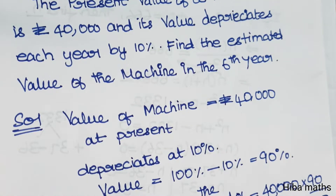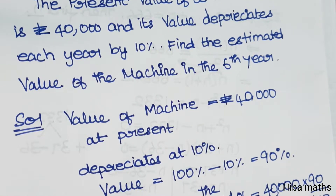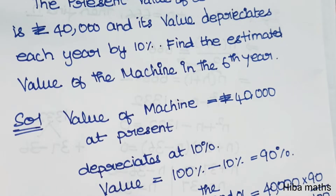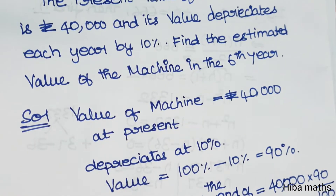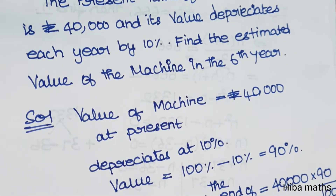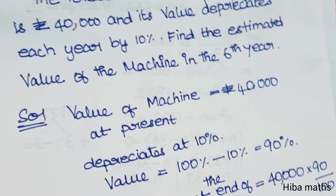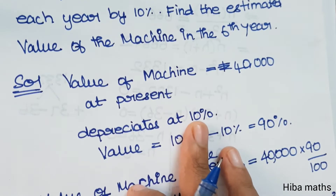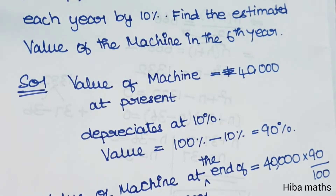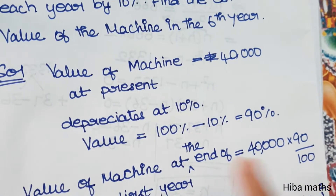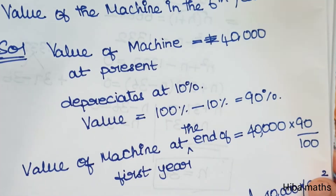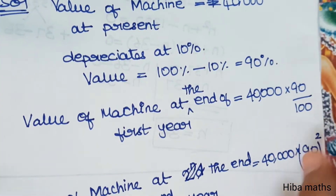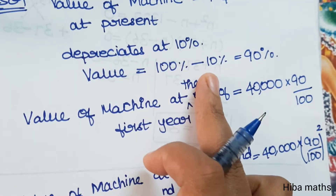To understand this easily, consider a phone that costs 10,000. Over the years its value drops — perhaps to 8,000 or 6,000. So in a year, the value is a little less, and that reduction is called the depreciation amount. Now in the 6th year, the machine's present value is 40,000 and it depreciates by 10% of the value each year.